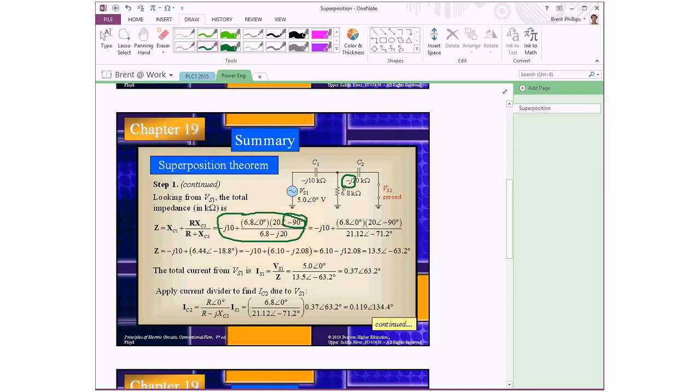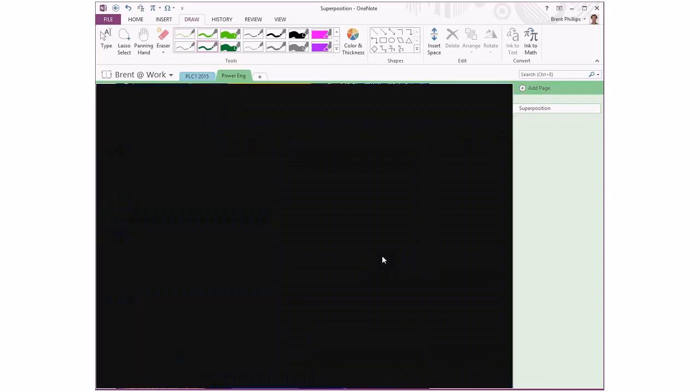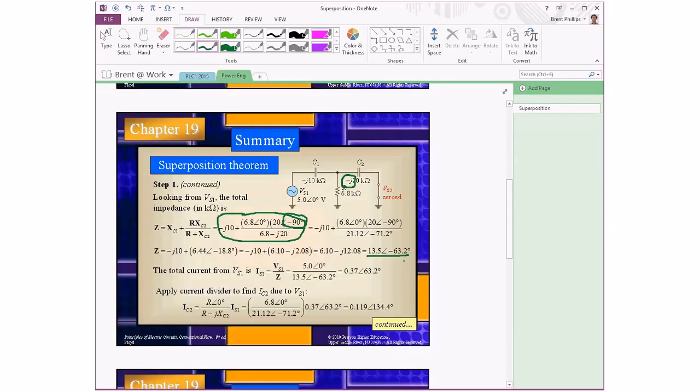So either using your calculator that'll do the complex numbers for you, or working carefully through the steps of the calculation, we'll get to our answer for the total impedance that the left hand source sees when it's trying to push current into the circuit. The next step is to figure out exactly how much current that will be, and that's just from the AC version of Ohm's law, with voltage divided by impedance.